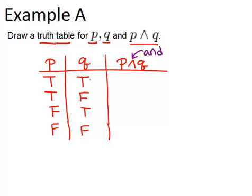So the only time where both of them are true is the first one. So in that case P and Q will be true, but in the rest of them P and Q would be false. So that's a truth table for P, Q, and P and Q.